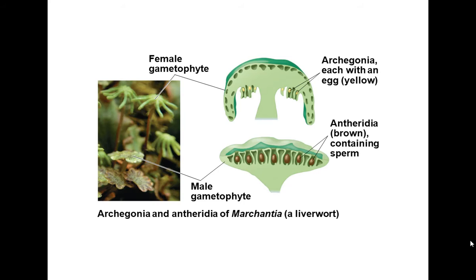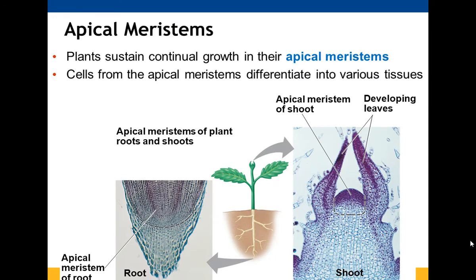Apical meristems allow plants to grow. They're found in your roots and shoots and allow additional leaves to be formed. Right now we're seeing a lot of perennials start to come up because of the nutrients stored in the meristems, so they can make the proteins needed for the plant to grow.